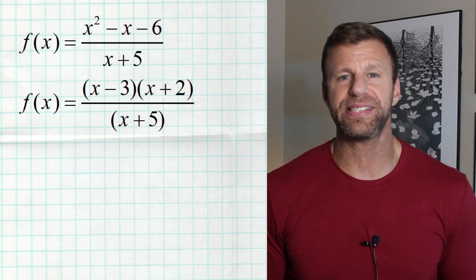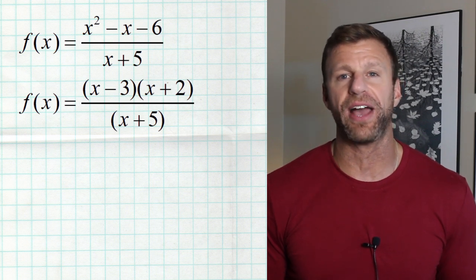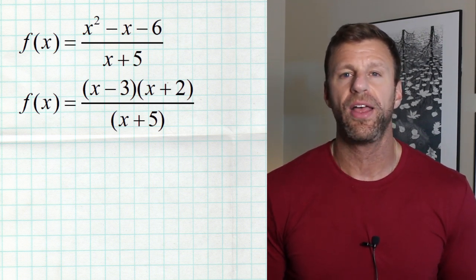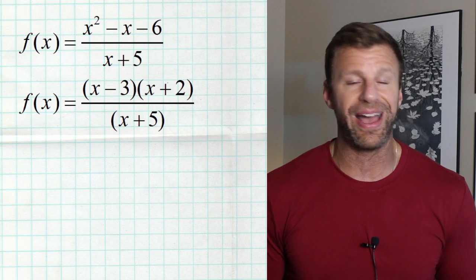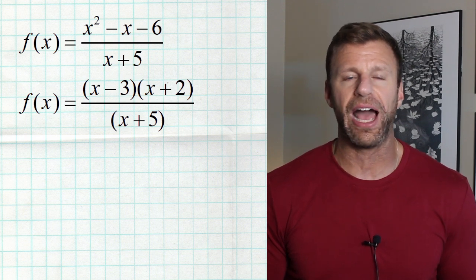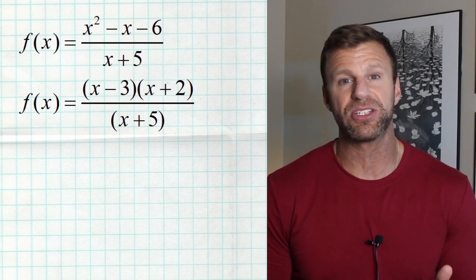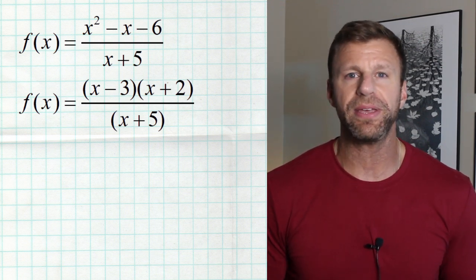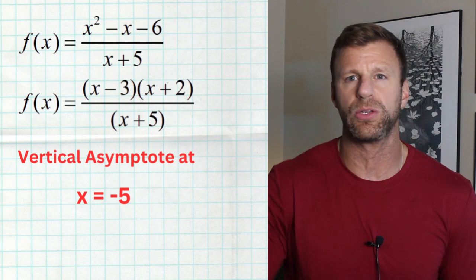Now let's take a look at some specific examples with real rational functions. In this first example we see standard form on top and factored form below — factored form is what you want for everything else. The most important thing is to factor it so you can see what values make the numerator and denominator zero. We notice that negative five needs to be excluded from the domain because it makes the denominator zero. That nothingness could be either a hole or a vertical asymptote. Because negative five only makes the denominator zero, that creates a vertical asymptote at x equals negative five.